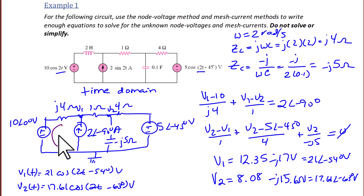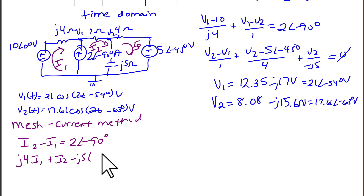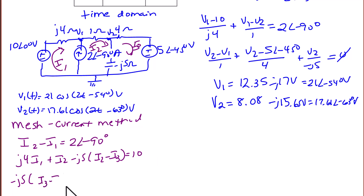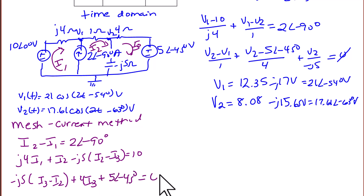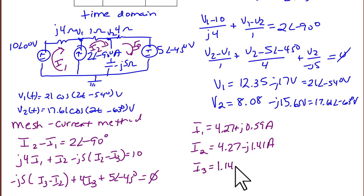To apply the mesh current method, we assign clockwise currents I1, I2, and I3 for each mesh. The super mesh equation is I2 − I1 = 2∠−90°. KVL for the super mesh: j4·I1 + I2 − j5·(I2 − I3) = 10. Then for mesh 3: −j5·(I3 − I2) + 4·I3 + 5∠−45° = 0. Solving: I1 = 4.27 + j0.59 A, I2 = 4.27 − j1.41 A, I3 = 1.14 − j3 A.